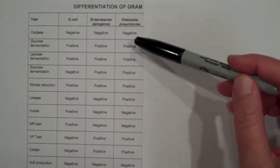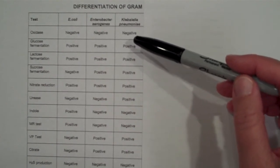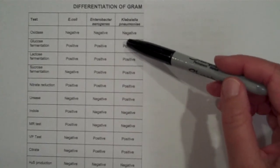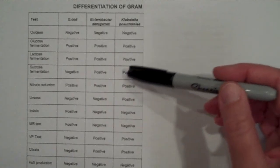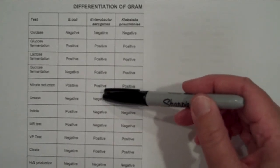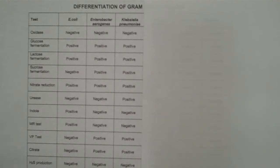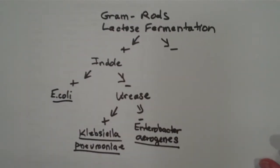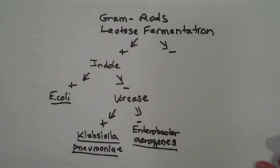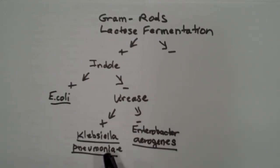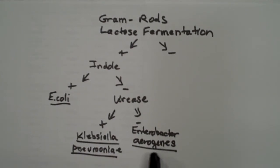So now we need to go back to the biochemical testing chart and separate Enterobacter and Klebsiella. We just need to find a test where they don't test the same. We could use urease, because one tests positive and one tests negative. So we added urease, and the positive result is Klebsiella pneumoniae and the negative is Enterobacter aerogenes. This whole side of our gram-negative rod dichotomous key is now complete — we've separated those three bacteria based on biochemical test results.